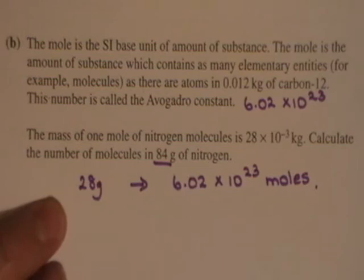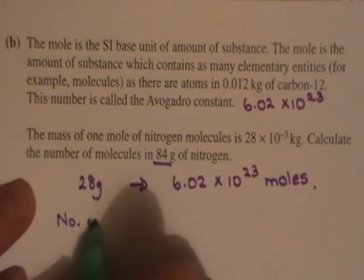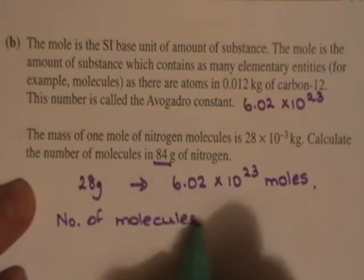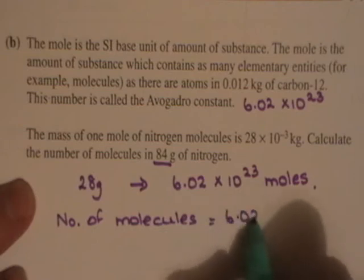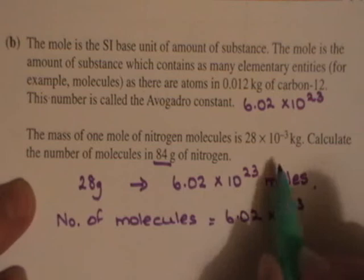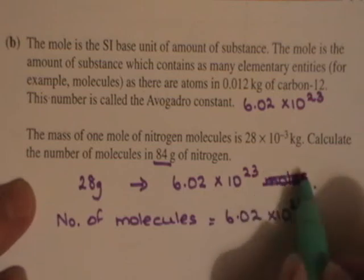So what you're looking for here, then, the number of molecules is equal to 6.02 by 10 to the 23—sorry, that isn't moles there, that's the number of molecules. I should have written molecules.